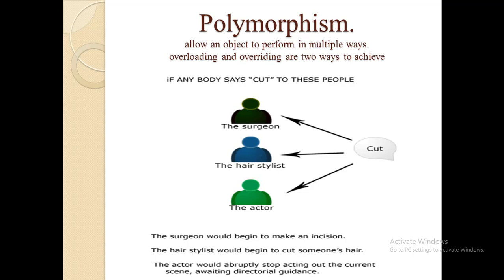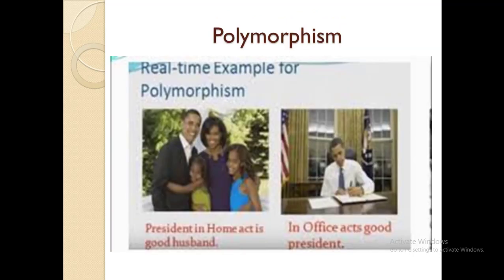Overloading and overriding are two ways to achieve polymorphism. For example, we give the single command 'cut' to three different people: a surgeon, a hair stylist, and an actor. If we give 'cut' to a surgeon, the surgeon would begin to make an incision. If we give the same command to a hair stylist, they would begin to cut someone's hair. And if we give it to an actor, the actor would abruptly stop acting and await directional guidance. So one command, but different behaviors by different people. Another real-world example: a president at home acts as a good husband, while in the office he acts as a good president.